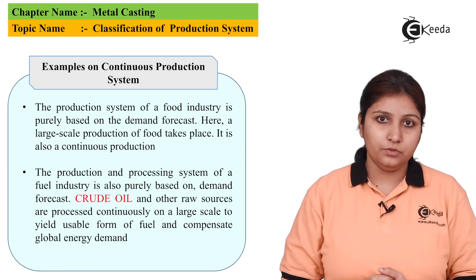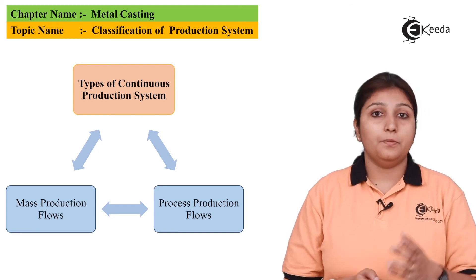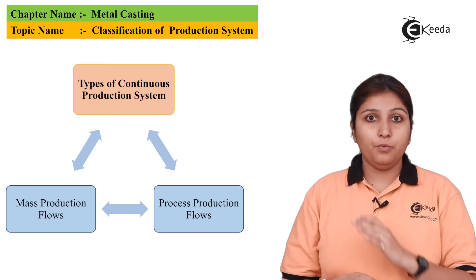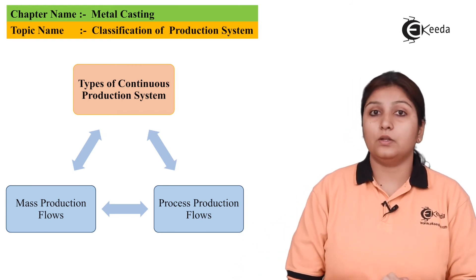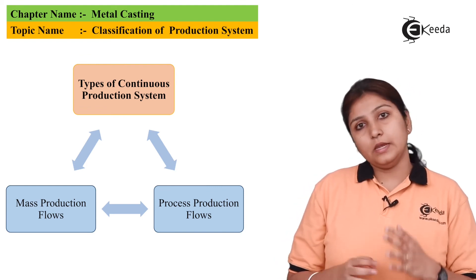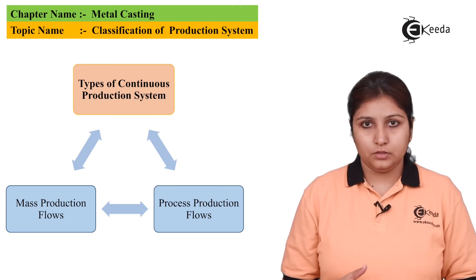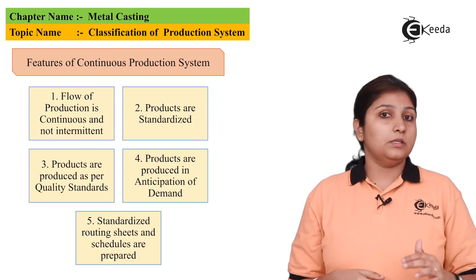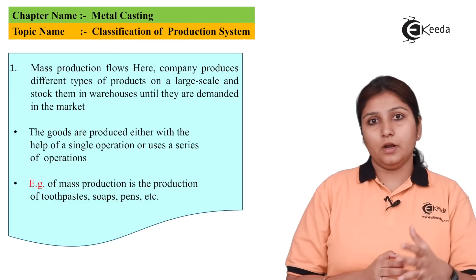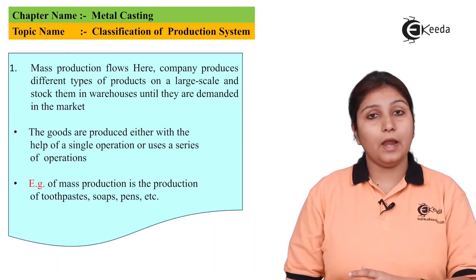The first sub-type is mass production system, the second is process production system. Salient features of continuous production: production is continuous, there is no stoppage in the material flow, input is given on a continuous basis, and product is obtained on a continuous basis. In mass production, large quantities of different objects are made, stocked, and used whenever required. Materials and machines are used continuously; demand is continuous. Different varieties of products can be made — for example, different varieties of toothpaste or pen — so mass production enables different varieties in large numbers.